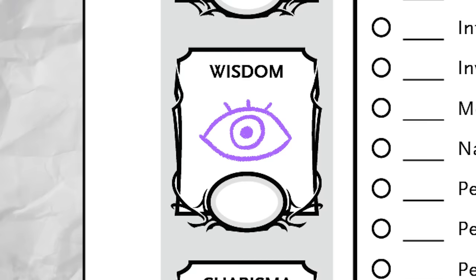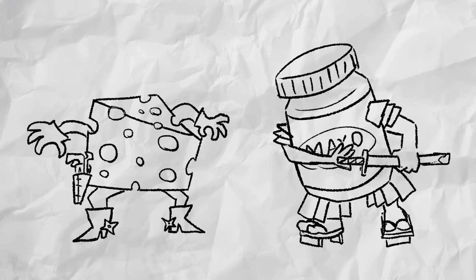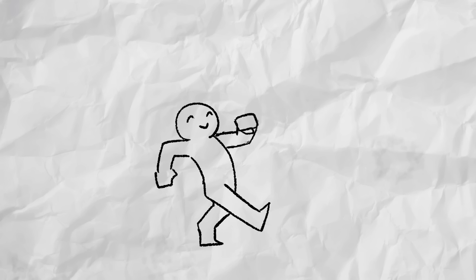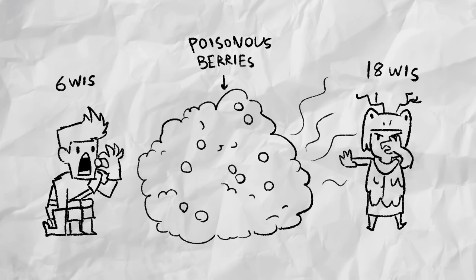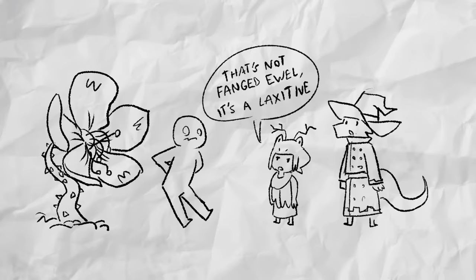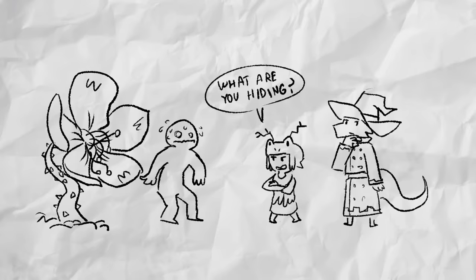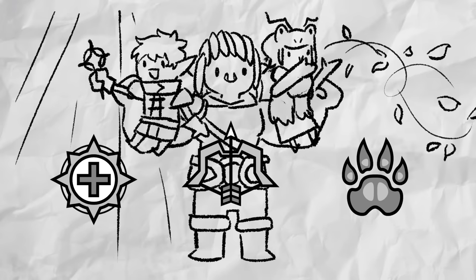Wisdom is one that confuses a lot of people because they think it's just like intelligence. No, wisdom is more your street smarts and also general senses. It's knowledge based on practice and experience. And it's the difference between knowing if a plant is poisonous and knowing that the person who told you it was poisonous lied about it because they don't want you finding their beloved lemon tree, you damn lemon whores. It's also the casting ability of clerics, druids, and rangers.